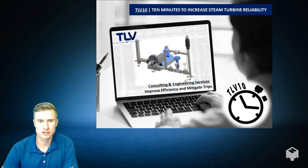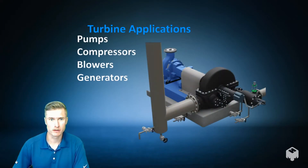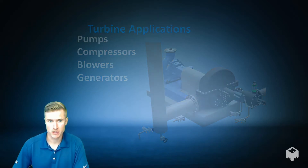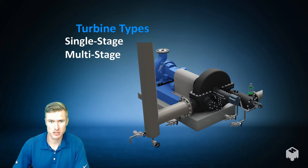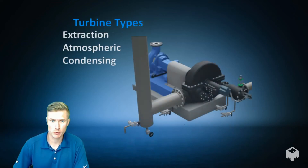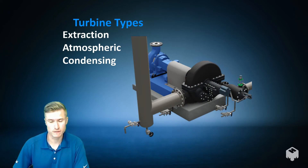Today we'll be discussing turbines and how to improve their efficiency and reliability as it relates to steam supply, steam exhaust, and condensate drainage. We frequently see turbines driving rotating equipment such as pumps, compressors, blowers, and generators. As for types of turbines, we see both single-stage and multi-stage. These can fall into the category of a back pressure turbine, atmospheric turbine, or condensing turbine, also known as a vacuum turbine.